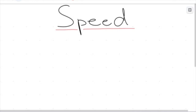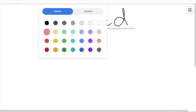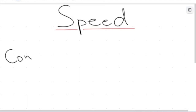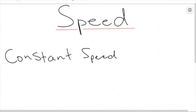We measure speed in relation to two other types of things, and we're going to talk about those in just a second. For the purposes of this video, we are just going to be talking about constant speeds. Imagine you're driving on a highway, you click on cruise control and your car drives itself, maintaining a constant speed. We're looking at constant speed.